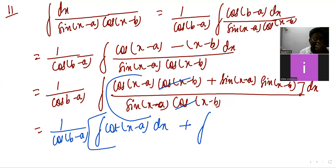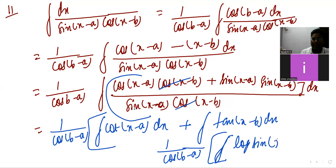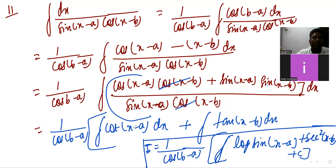You will get 1 upon cos(b minus a) integration: sin(x minus a) cancels giving cot(x minus a) dx, plus integration where sin(x minus b) cancels giving tan(x minus b) dx. Cot integration is log|sin(x minus a)| and tan integration gives log|sec(x minus b)| + C. This is the answer.